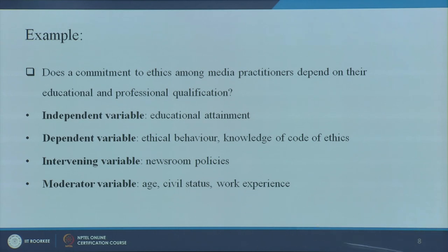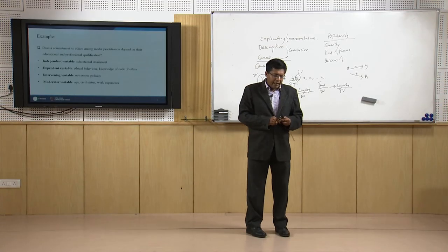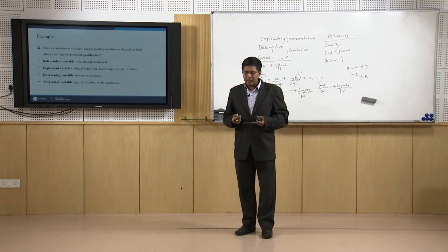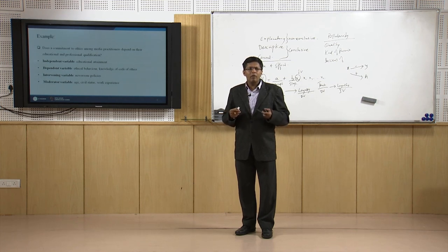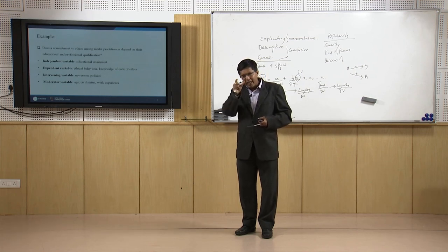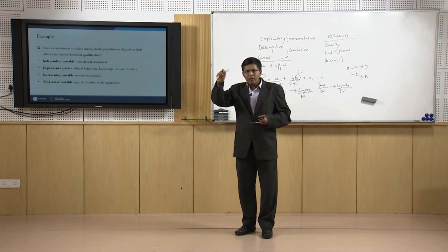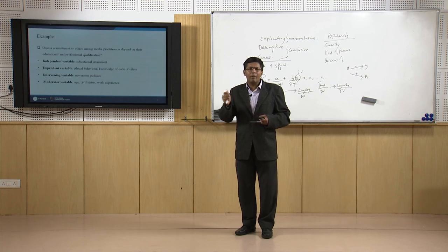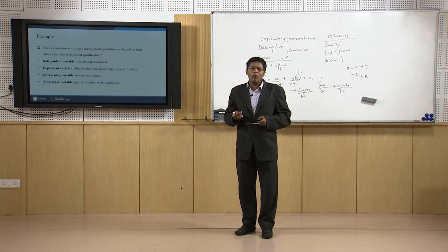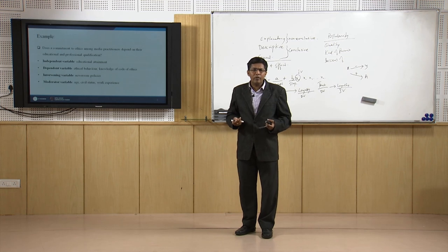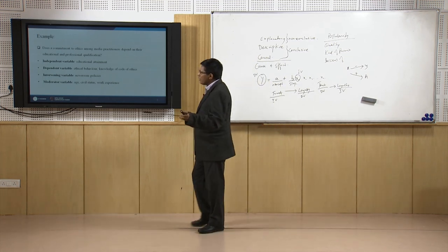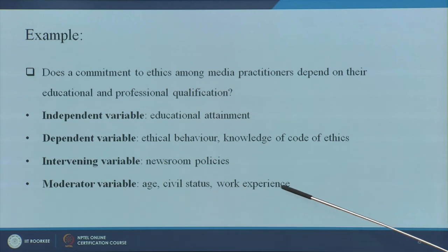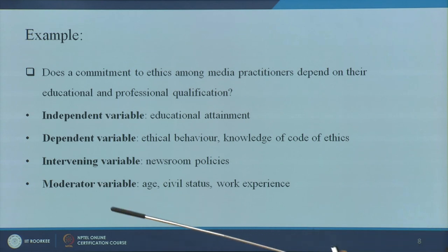Moderating variables are also there. For example, age affects the choice of a tourist destination — what place you want to visit is affected by your age. The more you grow in age, you tend to become more spiritual. Similarly, the more educated you are, the better-polished your behavior is assumed to be. These are considered moderating variables and mostly are demographic variables.